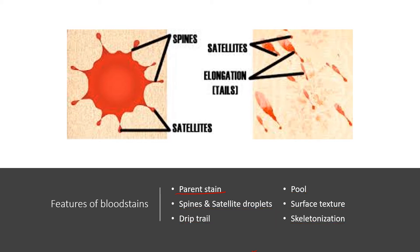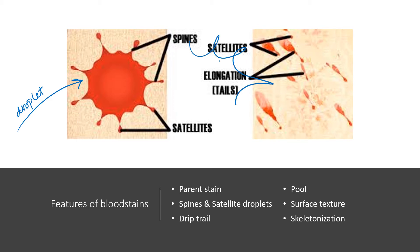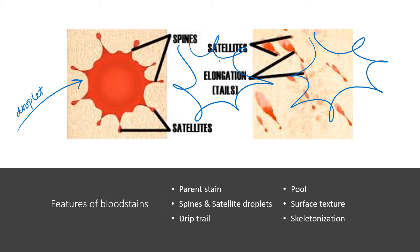The parent stain is the major portion of the stain. The spines and satellite droplets involve these sort of sticky-outy parts — those are your spines — and the outside droplets are your satellite droplets. They may be connected or they may be separate. A drip trail refers to a series of these droplets in line, where you can draw a line through them to create a path.